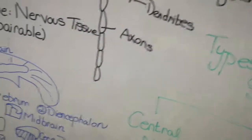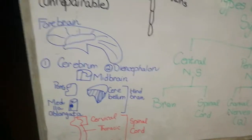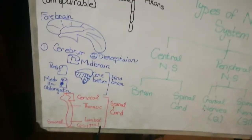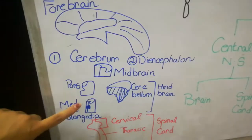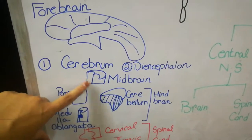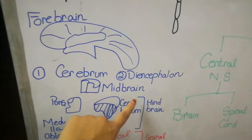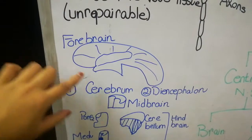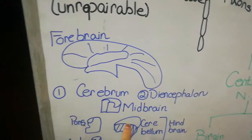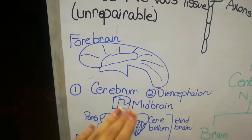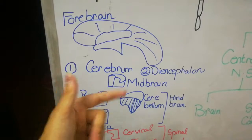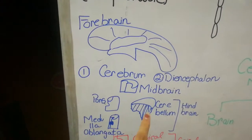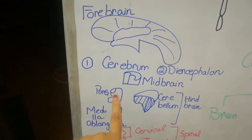Now, coming to the brain — just an introduction about your brain and spinal cord; details will come in upcoming videos. The brain is further divided into three parts: forebrain, midbrain, and hindbrain. The forebrain consists of your cerebrum and diencephalon. The midbrain has no particular organs or structures identified; it is named midbrain because it is present between the forebrain and hindbrain. The hindbrain is further divided into medulla oblongata, pons, and cerebellum.